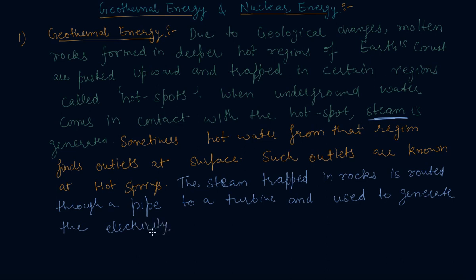This is what we call geothermal energy. The molten rocks formed in deeper hot regions of earth's crust are pushed upward and trapped in certain regions called hot spots. When underground water comes in contact of these hot spots, they produce steam. This steam gets trapped through a pipe to the turbine and used to generate electricity.